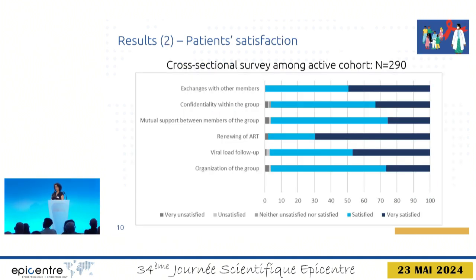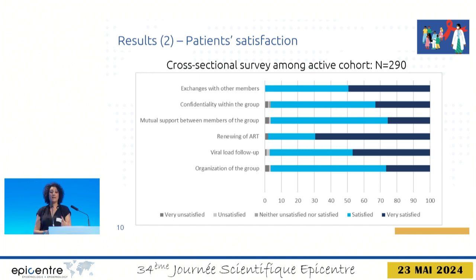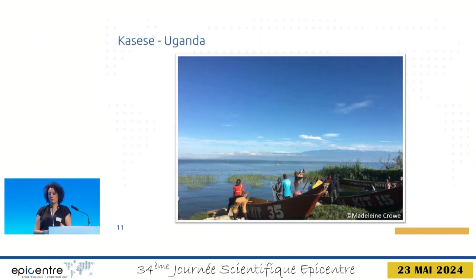For patient satisfaction, we used a cross-sectional survey of the active cohort with a satisfaction questionnaire we designed ourselves. The questions covered exchanges with other members, confidentiality within the group, mutual support between members, renewing of ART, viral load follow-up, and organization of the group. Satisfied and very satisfied was the majority of patients with this model.